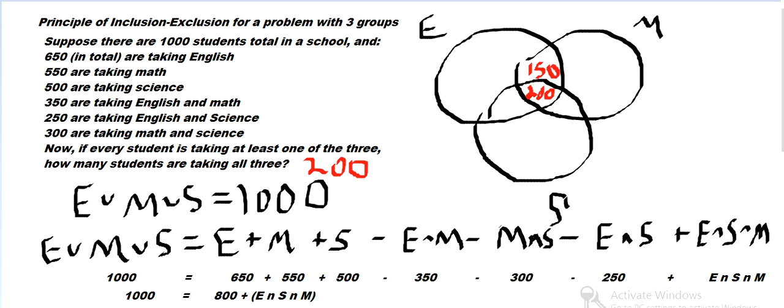Math and Science is 300, so that means 100 will be in here. That's Math and Science, and not English. English and Science is 250 total. So, and then 200 of that is in the intersection of all three, so that leaves 50 behind.